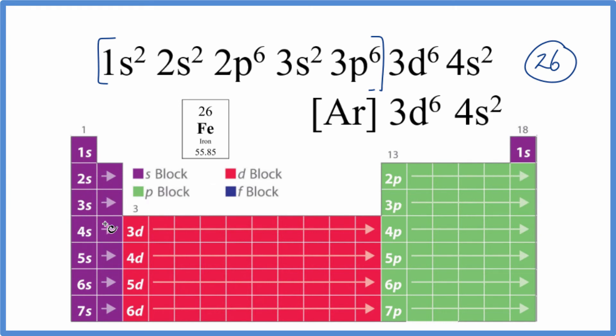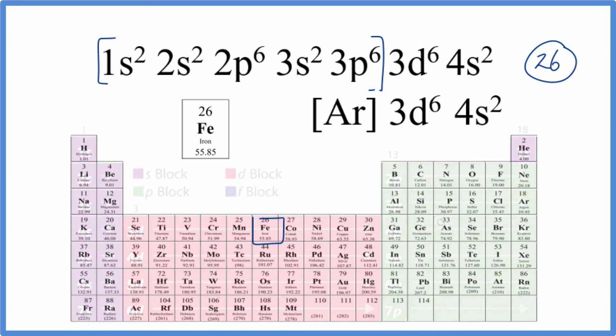Here's our 4s², and that's followed by 3d. We want to find 3d⁶. So we go 1, 2, 3, 4, 5, 6, right here. This element should be the one that represents this electron configuration. There it is, iron, just like we found before.